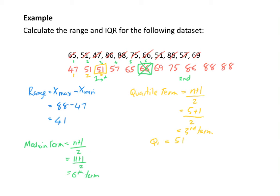To find my quartile 3 value, I want to find my third value in the second half. Going to the first number in the second half and counting to the 3rd term, that's going to be 86. So my quartile 3 value is equal to 86. The interquartile range is going to equal quartile 3 minus quartile 1, which equals 86 minus 51, which equals 35. So my interquartile range is 35.